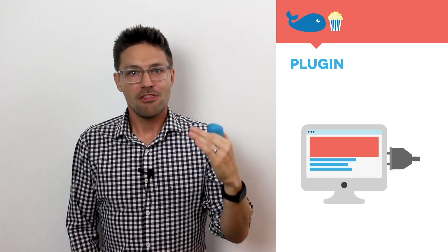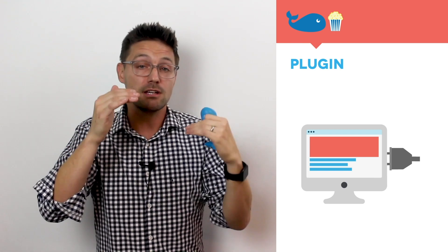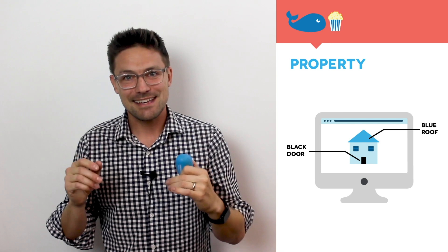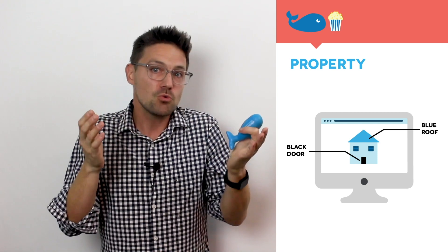Plugin. Modules or software that can be added, plugged in to a system for added functionality or features. We just mentioned the Yoast plugin for WordPress, for instance. Property. These are characteristics that are dictated by CSS, such as color schemes or fonts. The property of an H1, for instance.